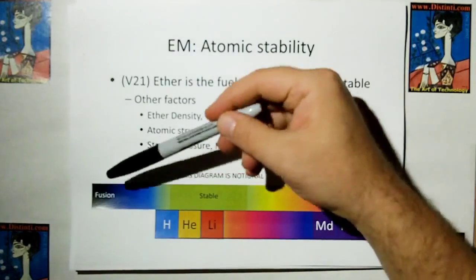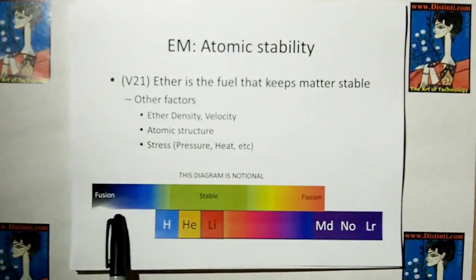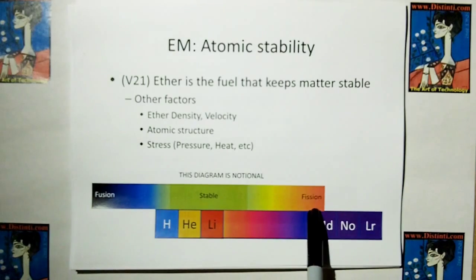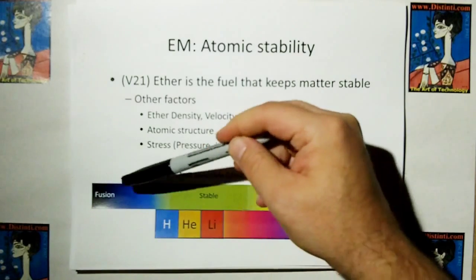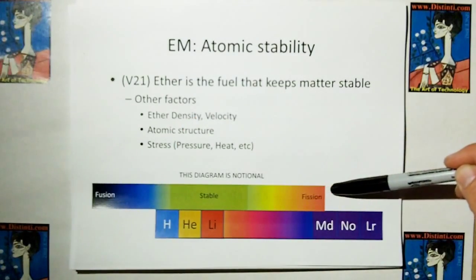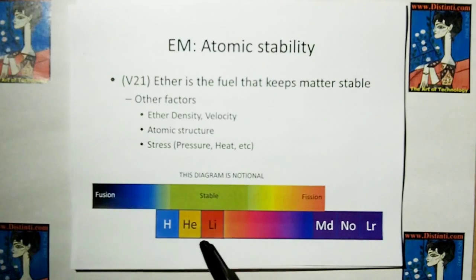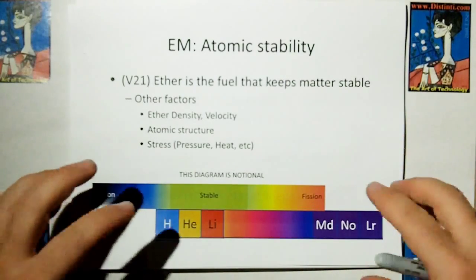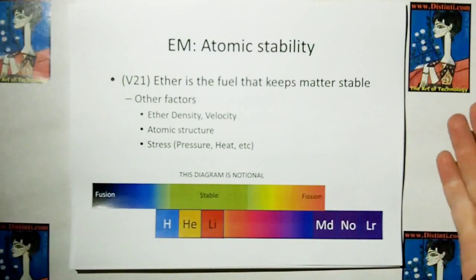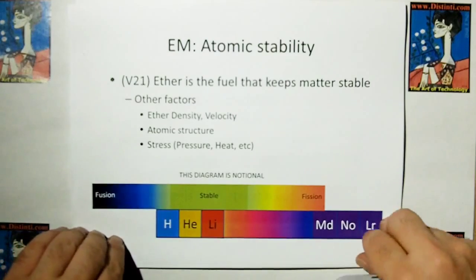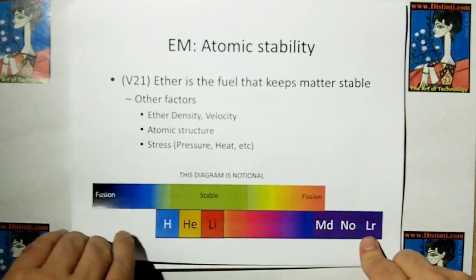What we have here is a stability chart. Elements that are over here are going to automatically fuse into heavier elements. Elements over here are going to break apart and fission. This location of this stability depends on the density and the velocity of ether, as well as the atomic structure. Some of these structures are less stable than others. Like, for example, deuterium is less stable. So really, this is a notional diagram, because a true stability diagram would probably be a two- or maybe even a three-dimensional chart. But atomic structure does play a part in stability.